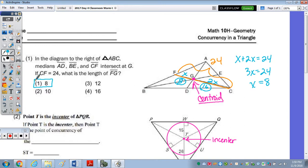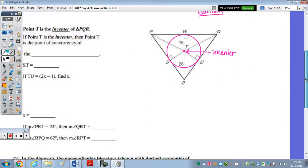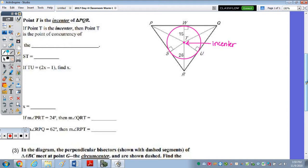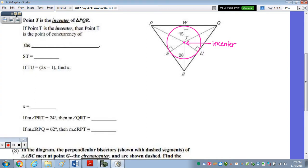In number two, we have the incenter. And remember, when you draw a circle with the incenter, the circle is inside or inscribed within the triangle. The first part of that question states that if point T is the incenter, then point T is the point of concurrency of the angle bisectors.